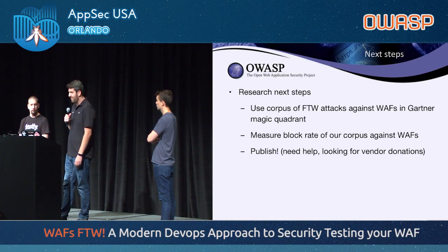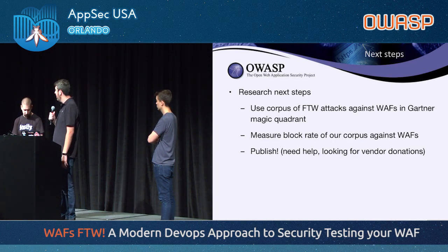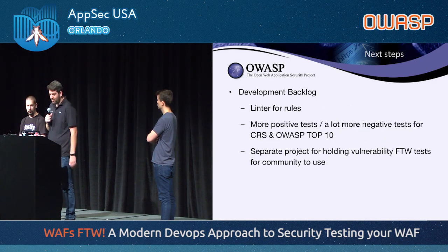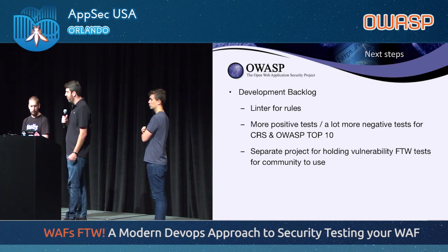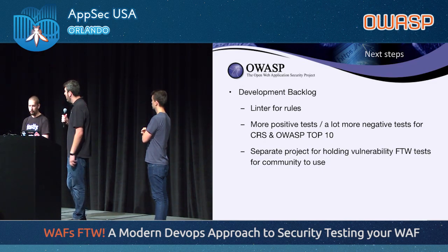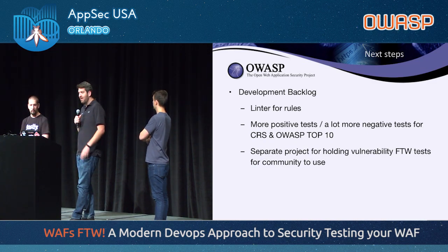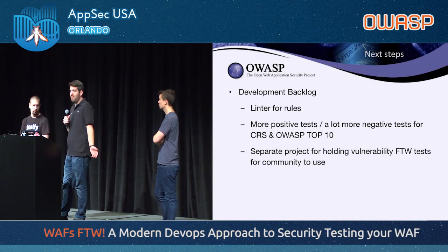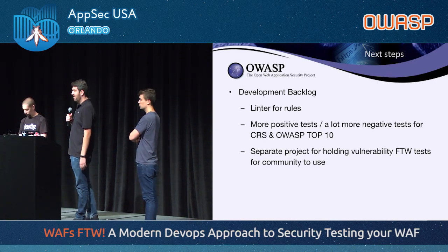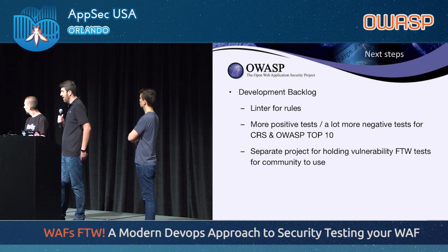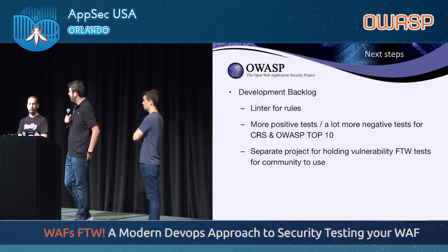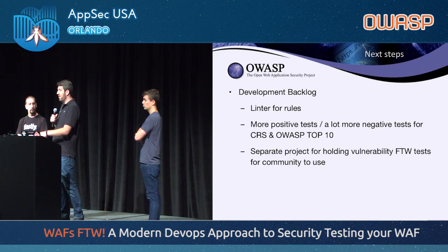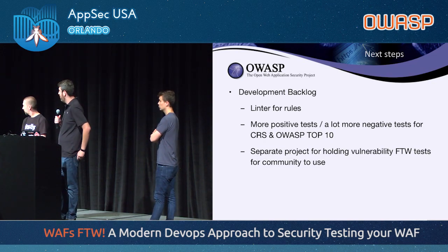Additional future development goals: right now when you write a rule, there's no existing linter, so we're going to add a linter for the YAML rule language. We also want to add more positive and negative tests. It would be helpful to scrape the Alexa top million to create a list of negative rules — so we know what's firing as a false positive. That should generally increase the overall quality of web application firewalls. We also want a separate repository for holding vulnerabilities in FTW form for the community to use to test whatever they want. For instance, if a large PHP deserialization vulnerability comes out targeting a credit bureau, we could automatically write that rule in FTW form — and it doesn't even have to be used specifically for a web application firewall.